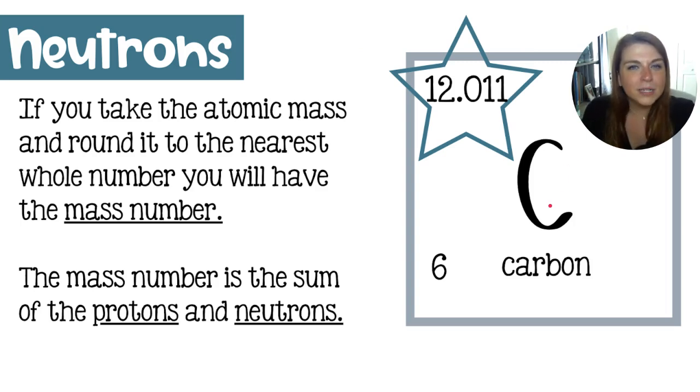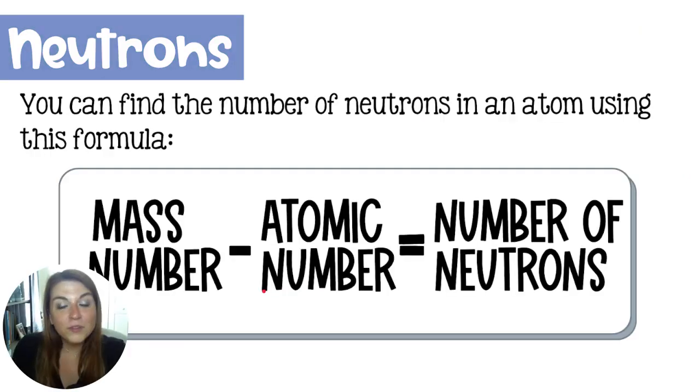Now finding the number of neutrons can be a little tougher. We are going to take the atomic mass or the average atomic mass and we're going to round it to a whole number. This is going to tell us the number of protons and neutrons within that atom. Knowing this is the number of protons and this is the number of protons and neutrons, how do you think we could find the number of neutrons itself? If you want to subtract those numbers, you're correct. You take that mass number or the average atomic mass rounded to a whole number, subtract out the atomic number and you would be left with the number of neutrons.